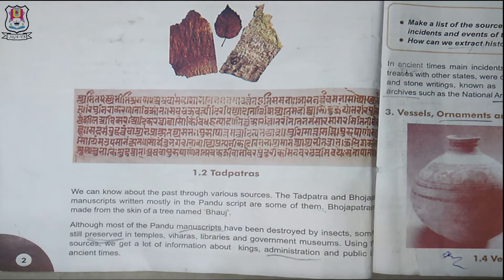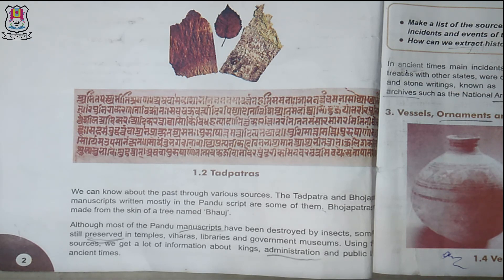We can know about the past through various sources — the Tadpatras and Bojpatras. Manuscripts written mostly in the Pandu script are some of them. Bojpatras are made from the skin of a tree named Boj. Tad tree ke pathe par purane zamane mein granth aadi likhe jaate the. Bojpatra, Boj tree ki chaal se bante hain.